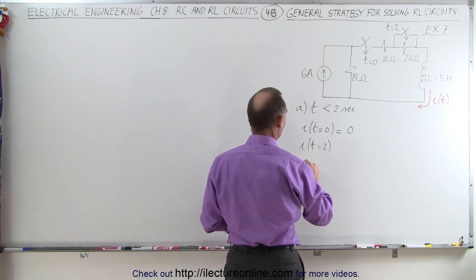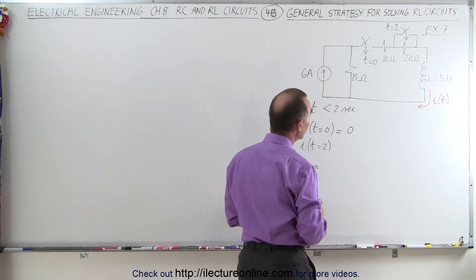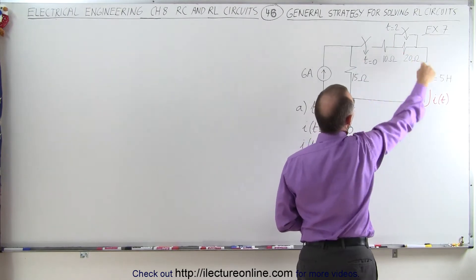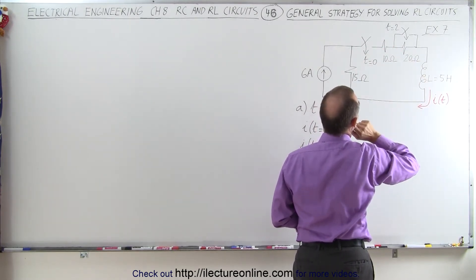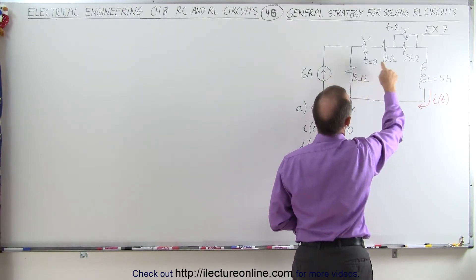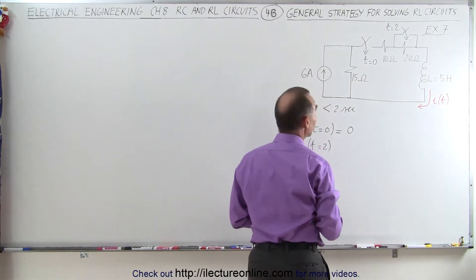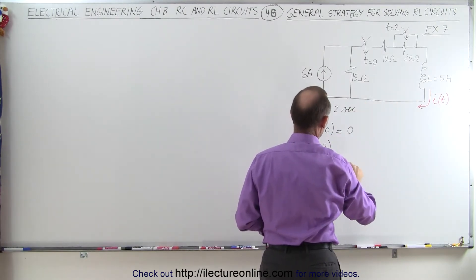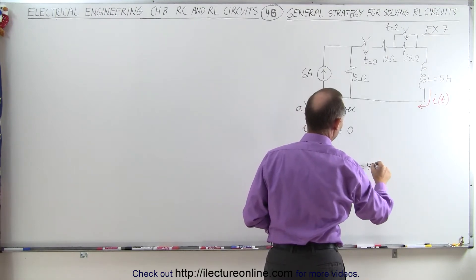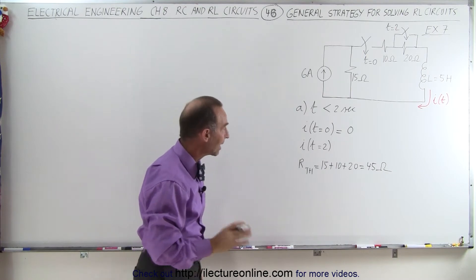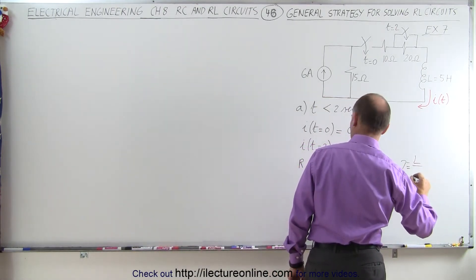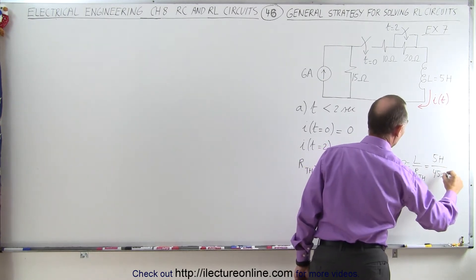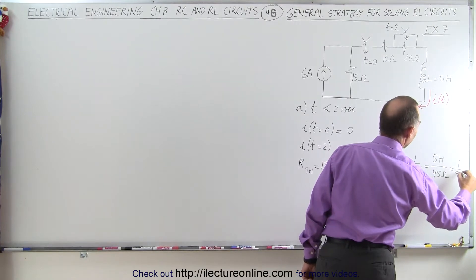First we'll get the Thevenin resistance, which means that once we close the switch, the current source will be removed from the circuit. We simply have a single loop branch right here, and that means we go through a 15-ohm resistor, a 10-ohm resistor, and a 20-ohm resistor. So the Thevenin resistance is going to be equal to simply the sum of all the resistances: 15 plus 10 plus 20, which equals 45 ohms. The time constant is equal to the inductance divided by the Thevenin resistance: 5 henries divided by 45 ohms, which is one-ninth of a second.